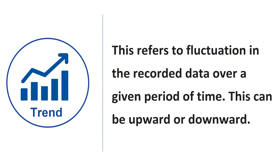Let us start with trend. Trend refers to fluctuation in the recorded data over a given period of time. The trend can be upward or downward — it can signify growth or decline. It is more visible when you aggregate your time data into week, month, year, and so on.